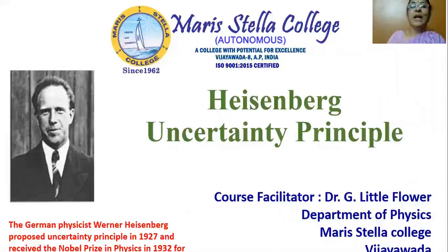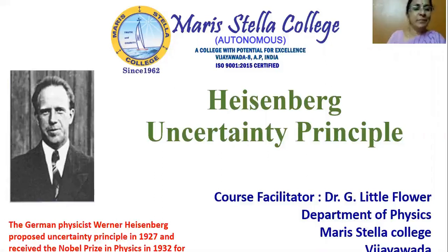Hello viewers, I welcome you all for today's talk on Heisenberg uncertainty principle in quantum mechanics. The German physicist Werner Heisenberg proposed this principle in the year 1927 and received the Nobel Prize in physics in 1932 for this principle and for his contribution in nuclear and atomic physics.